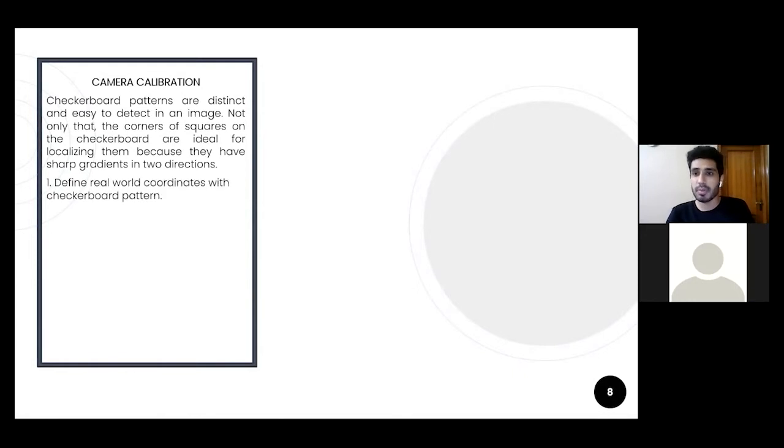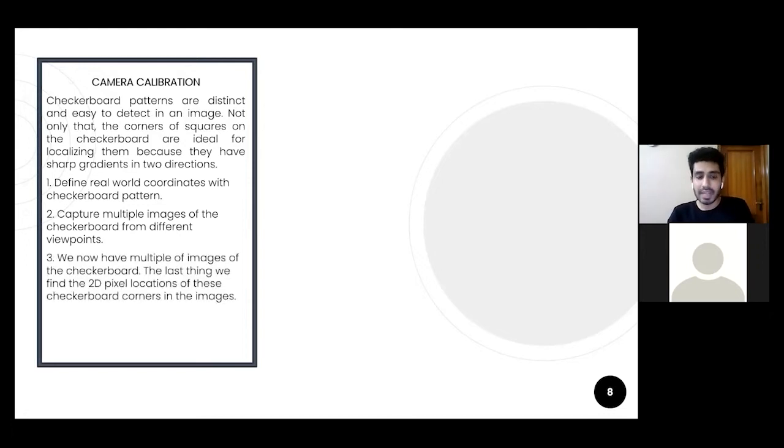The first step of camera calibration is to define the real world coordinates with checkerboard pattern. Then we capture multiple images of the checkerboard from different angles by keeping the checkerboard on a single place without moving it. Then after we have the 3D pictures of the checkerboard, we find the 2D pixel locations of these checkerboard corners in the images.